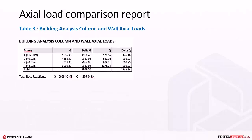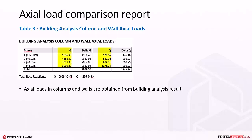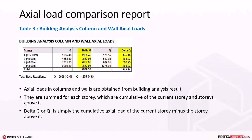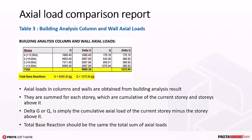Table 3 is building analysis column and wall axial loads. Axial loads of columns and walls are obtained from building analysis results. They are summed for each story. Axial loads are always cumulative — that is, cumulative of the current story and all stories above it. Delta G or Q is simply the cumulative axial load of the current story minus the story above it, which is equivalent to the individual story weight. The total base reaction shown should be the same as the total sum of axial loads.